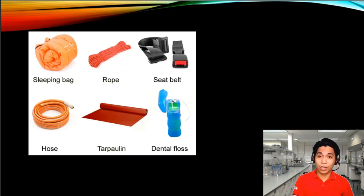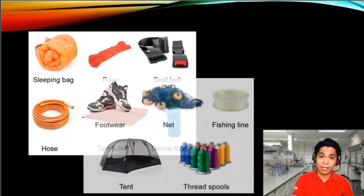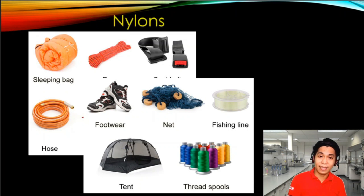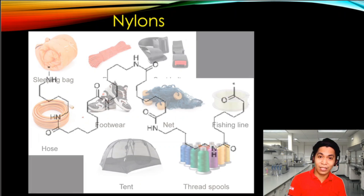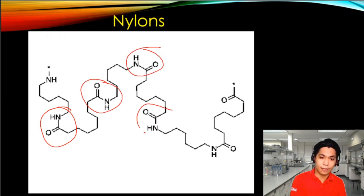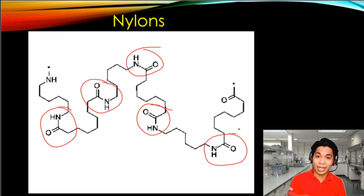In terms of structures, these materials and objects are made from multiple numbers of amide, known as nylon. This is the structure of nylon, and as you can see, it has multiple links of C double-bonded O and then nitrogen. Nylon, just like polyesters, is also hard to separate apart.